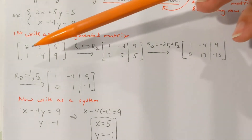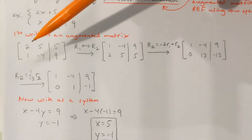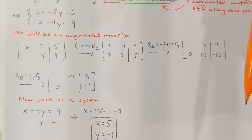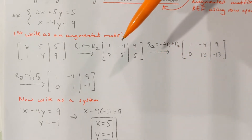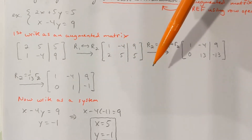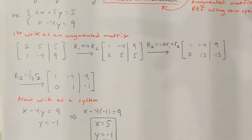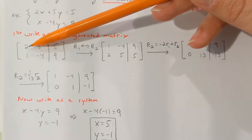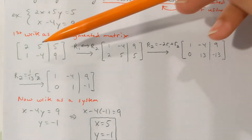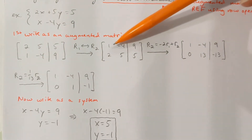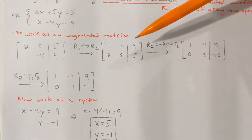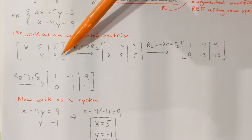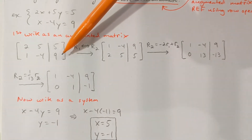Now I have to get this matrix into row echelon form, which means getting ones down the diagonal and zeros in the lower triangular part. There is a strategy: you want to get the columns set — get column 1 set, then column 2, then column 3, and so on. Step 1 is always to get a 1 in the upper left-hand corner. One of my row operations says I can switch any two rows, so if I switch rows 1 and 2, I'll have a 1 in the upper left-hand corner. Another option would be to multiply row 1 by 1/2, but that introduces fractions early on, and if we could avoid fractions, that's ideal.